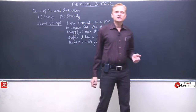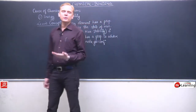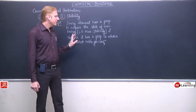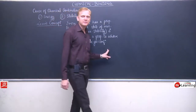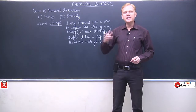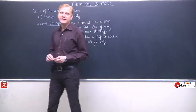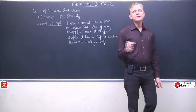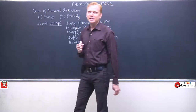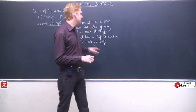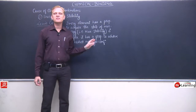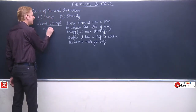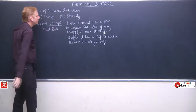हर element को stability चाहिए, energy कम करनी है, तो वो chemical combination करने की कोशिश करेगा। जब वो chemically combine होगा, change उसके electronic configuration में आएगा। यदि वो nearest noble gas configuration achieve करना चाहता है तो stability attend करेगा। Helium को छोड़कर बाकी सारे noble gases के outermost shell में 8 electrons होते हैं, इसलिए Lewis concept को octet rule भी कहा जाता है। Lewis concept is also expressed in terms of octet rule.